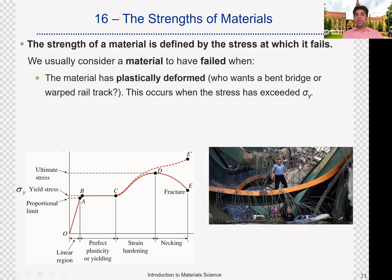Let's look at some examples of real failure of materials. This is a failure of a bridge — a really dangerous failure. You can see that these metal bars or beams have not completely broken into two pieces. They have deformed. Therefore this material, although it is still in one piece, is not usable anymore. It has exceeded its yield stress and therefore it has already failed.